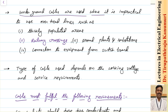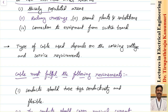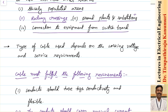Underground cables are used only where overhead lines are impractical, since overhead lines are much cheaper. Examples include thickly populated areas where sufficient clearance cannot be provided, railway crossings where an already electrified line makes overhead lines infeasible, hydroelectric power plants where power generated at 30 kV or 20 kV is transmitted to a nearby substation, and inside substations for connections to equipment from the switchboard.